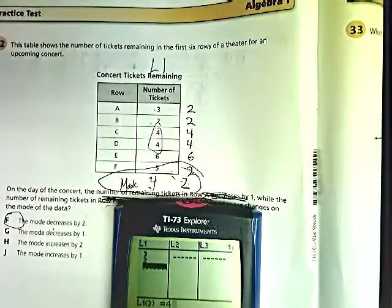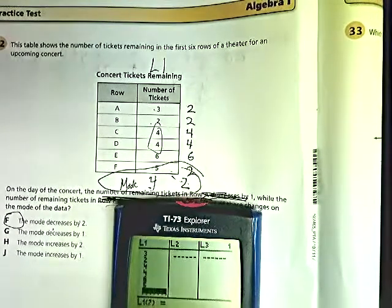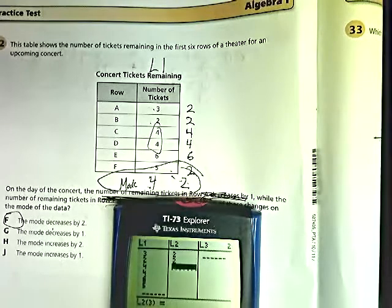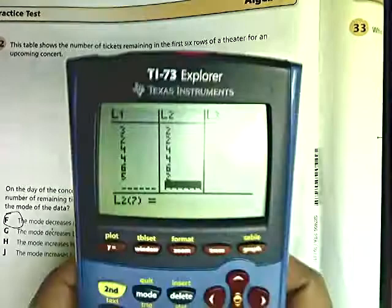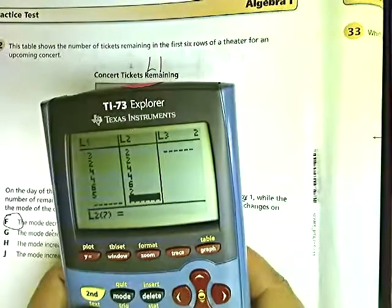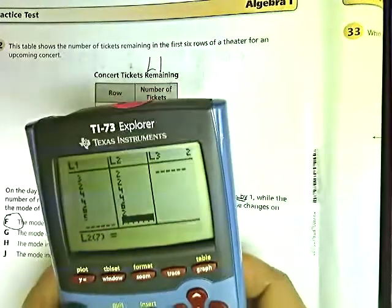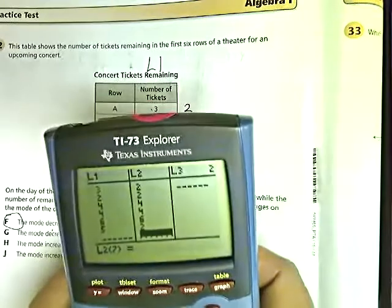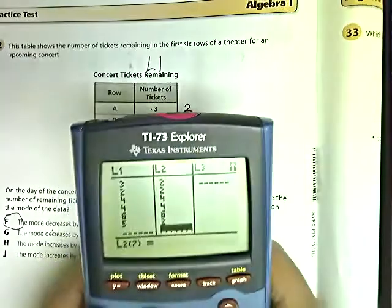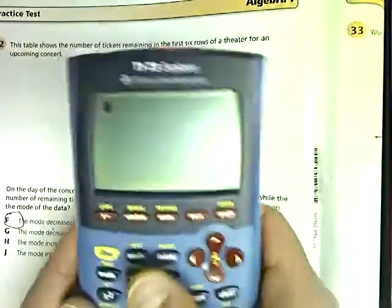And in L1, you want to put in what was originally there. So 3, 2, 4, 4, 6, 5. And in the other one, you go in and make your changes. They should be the same length, by the way. Unless you're changing one of the values in some way, like you drop a test grade or something. And then you quit out of that menu. Don't forget to quit first.